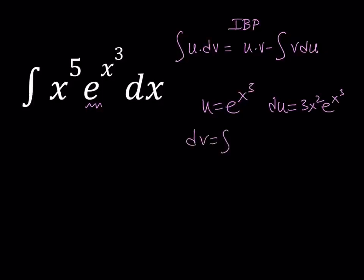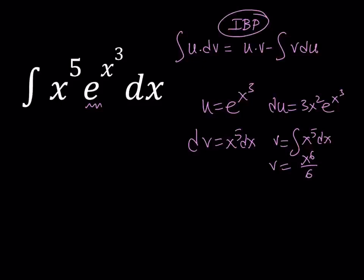And then, dv needs to be x to the fifth dx. So by integrating dv, you're going to get v, which is the integral of x to the fifth dx without the c. x to the sixth over six. Now, when you put it together in our integration by parts formula, we're going to get uv and then there's going to be a minus sign here.